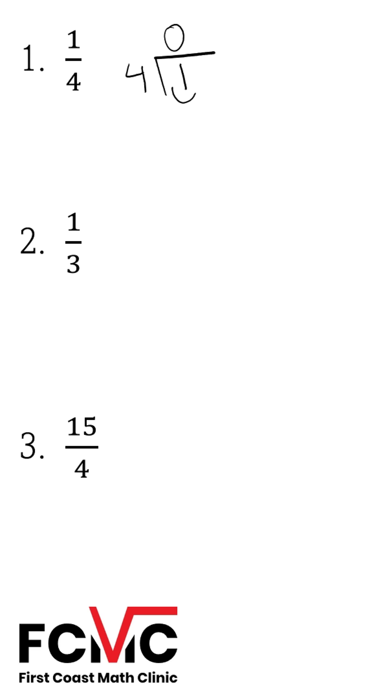I'm going to put a zero over the one. I want to make this number a little larger so I can divide it by four. I'm going to add a decimal to the right and a zero in the tenths column. So now I'm dividing 10 by four.